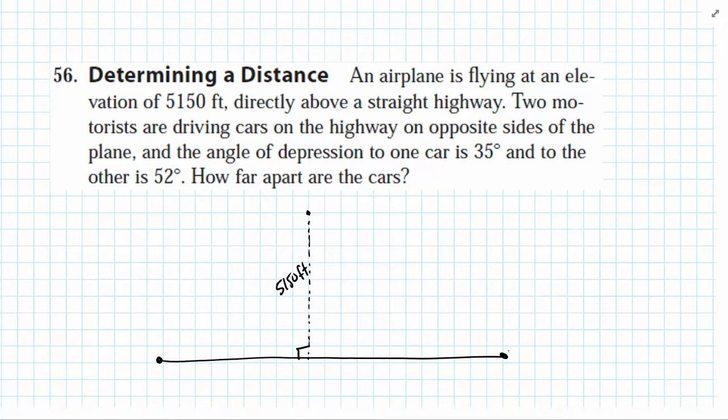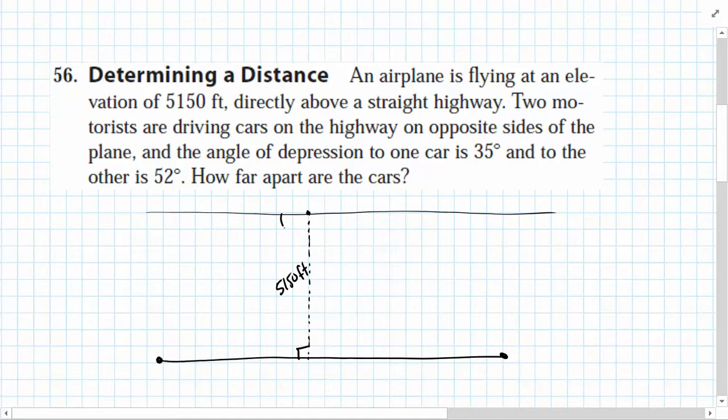The angle of depression to one car is 35 degrees and the other is 52 degrees. So when we're talking about angle of depression, remember that's also a measurement off of horizontal, but it's a downward measurement. So what we're saying is that the angle to one of our cars is 35 degrees, angling downward, and to the other it's 52 degrees. Now what we're being asked to find is how far apart the cars are. We need this total distance between the two. If we solve for x in this triangle and perhaps y in this triangle, we can add x and y together, and that would represent the distance between the cars.